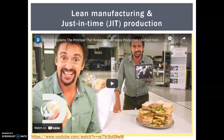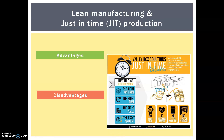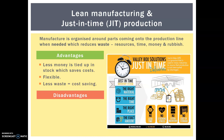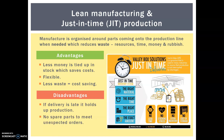As well as flexible manufacture, we have lean manufacture and just-in-time production. Manufacture is organized around parts coming onto the production line when needed — just-in-time. This reduces waste: things like resources, time, money, and literally rubbish at the end of it. The advantages are that there's less money tied up in stock, which saves costs; it's a flexible process and there's less waste, which is obviously going to save money. However, if delivery is late it holds up production overall, there are no spare parts to meet unexpected orders, and if there are delays it can be time-consuming.